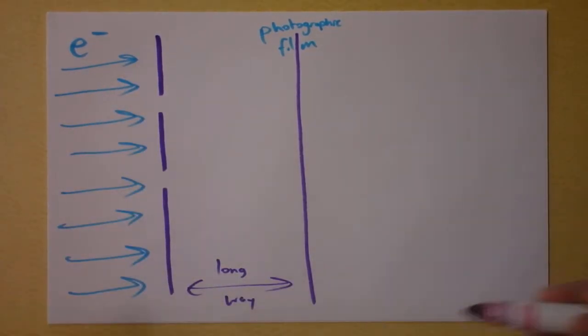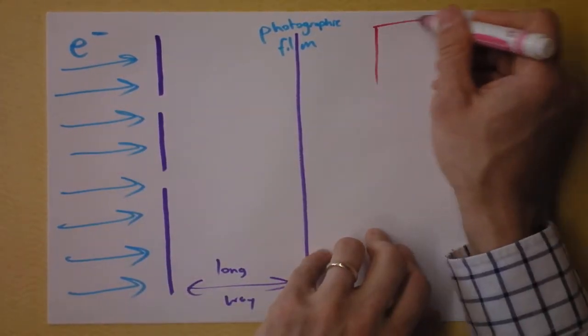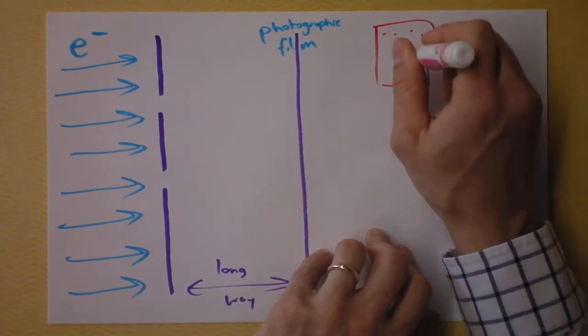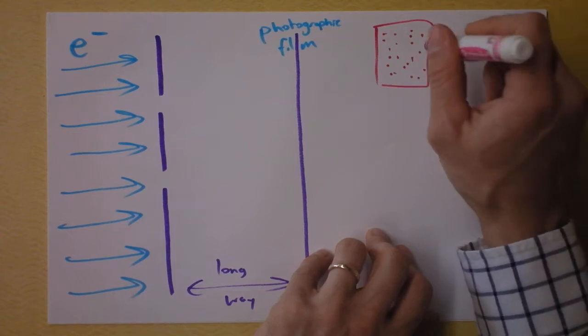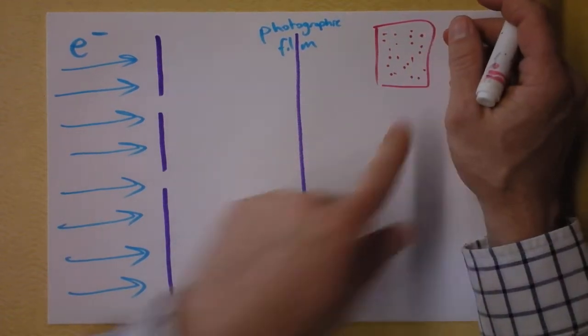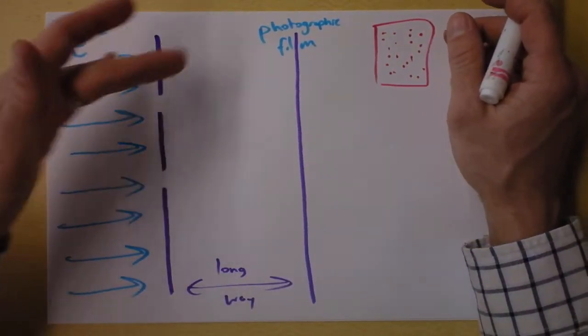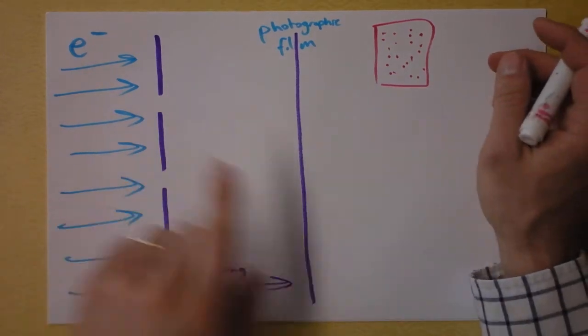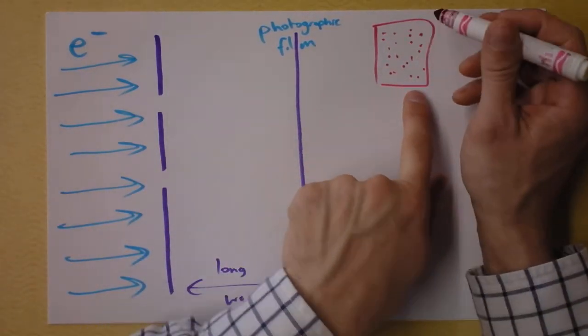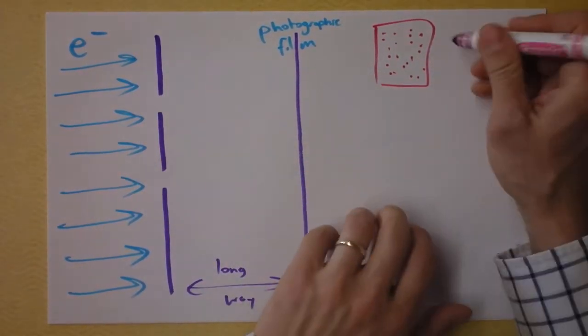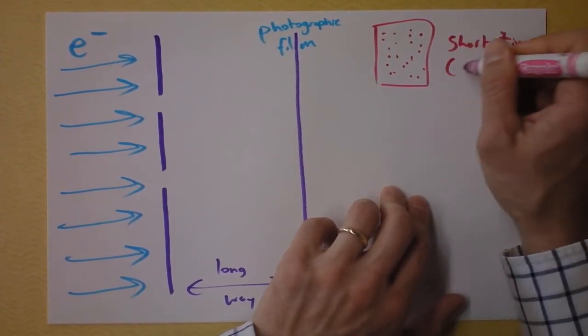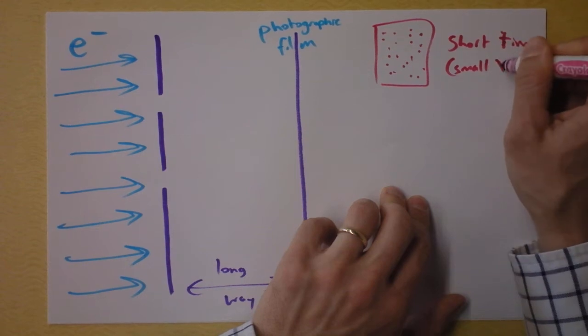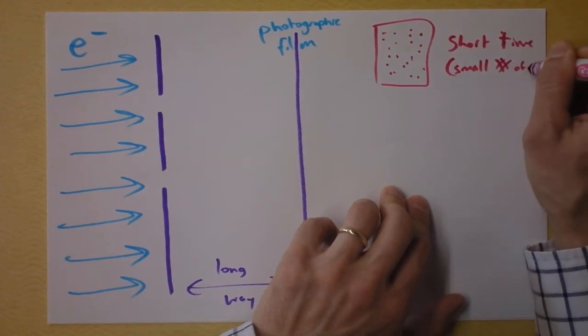And if I take that out and then look at it, then I will see a pattern like this on my film. I will see a random distribution of dots. Apparently random, but actually not random. Because you never know where the electrons are going to go, because there's some bending as they go through here. You don't know exactly what's up. But the electrons splatter themselves like this. And that's after a short time, or should I say small number, small number of electrons.